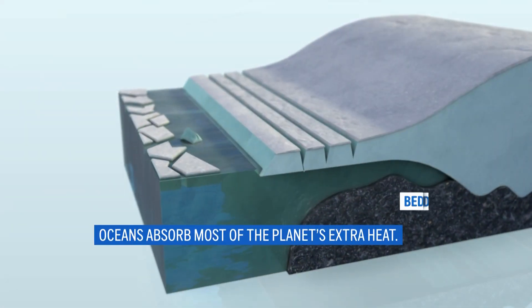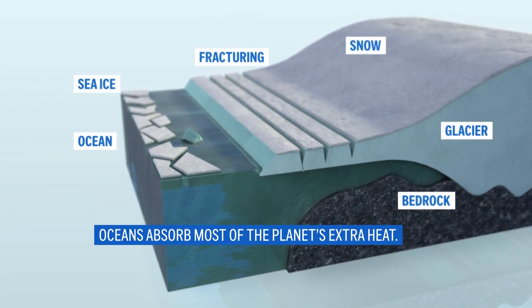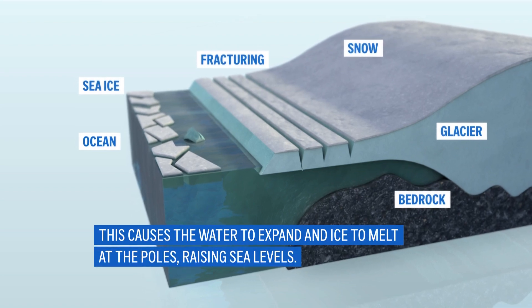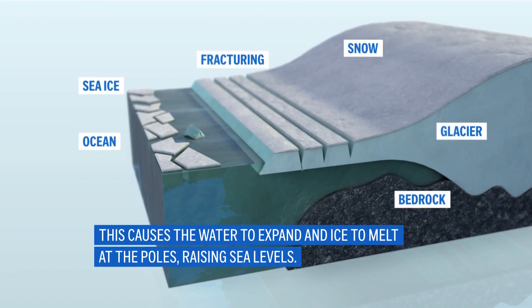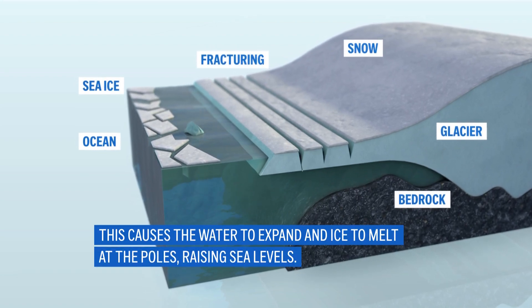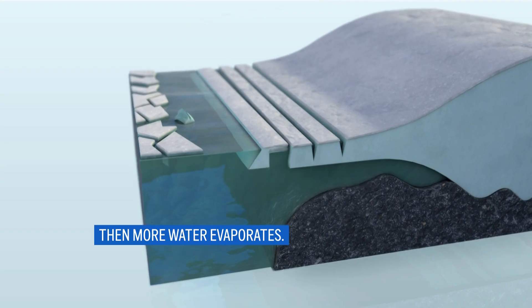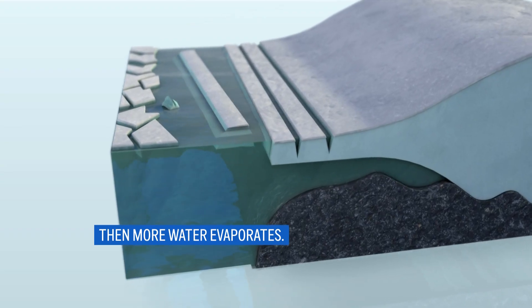Oceans absorb most of the planet's extra heat. This causes water to expand and ice to melt at the poles, raising sea levels. Then more water evaporates.